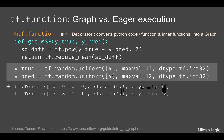Let's look at graph versus eager execution in a different situation where we have a function called get_mse. It takes two input arguments, y_true and y_pred, and returns the mean of the squared difference between those two. Above we have the decorator @tf.function which converts this Python function into a TensorFlow graph. Down here we have y_true and y_pred created using tf.random.uniform with integer type 32 — these are the two tensors we'll use as input to get_mse.